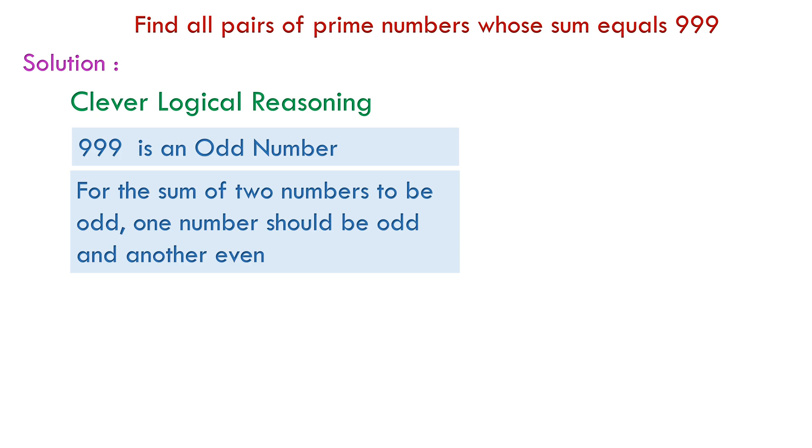If both of them are even or both of them are odd, we will end up getting an even sum. For example, two even numbers, let's say 14 and 32, gives us 46, which is an even sum.